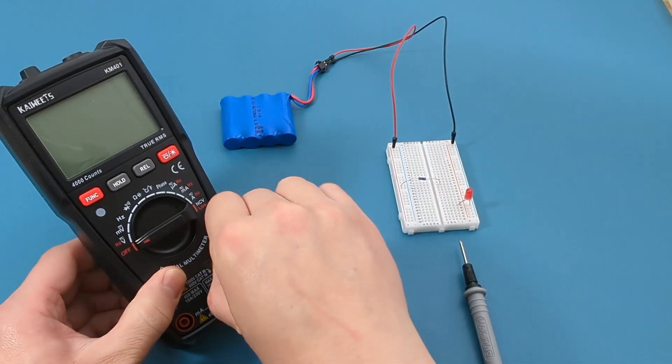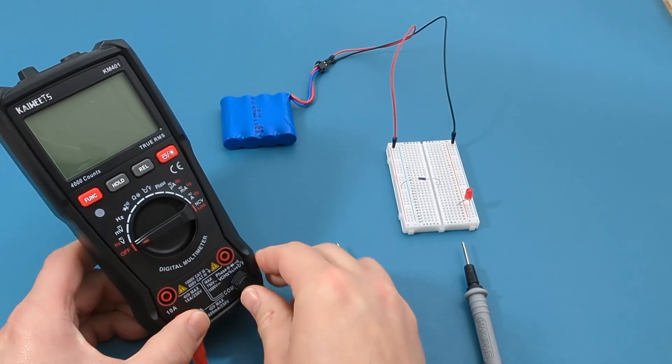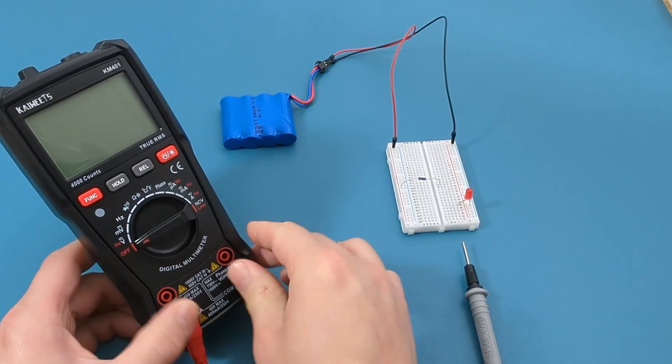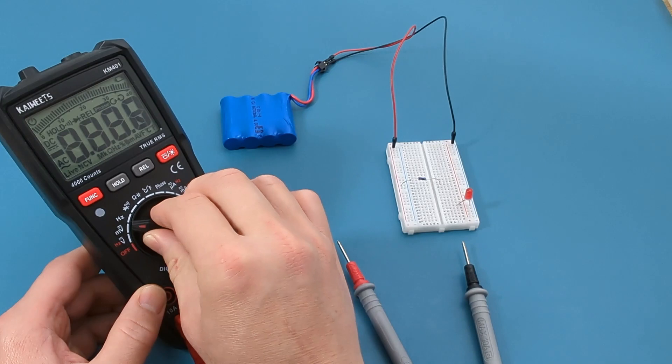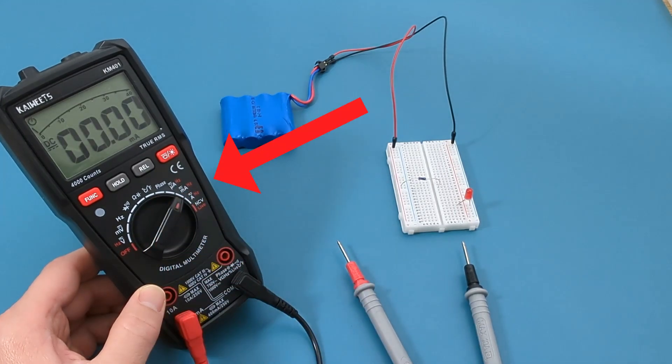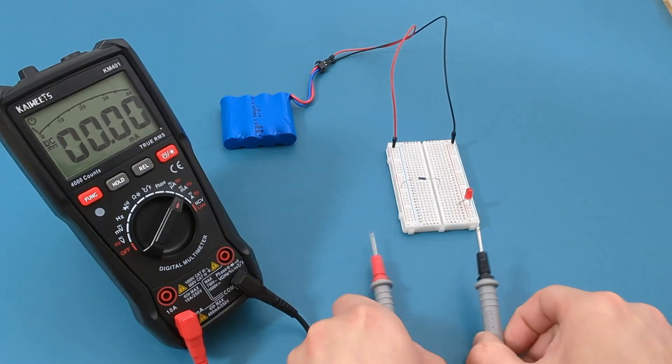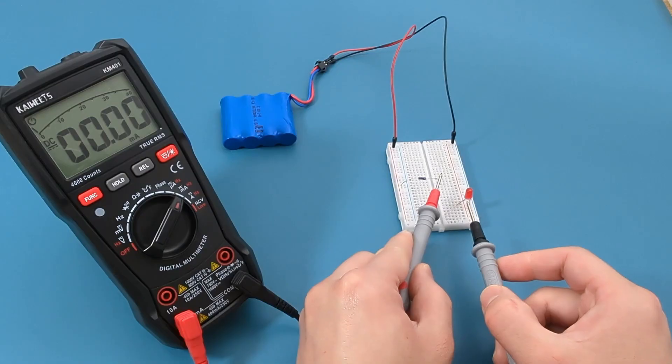Since we're measuring current, insert the red probe into the mA or milliamp port. To measure current, turn the dial to the mA setting. Touch the red probe lead to the right side of the resistor and the black probe lead to the left side of the LED.